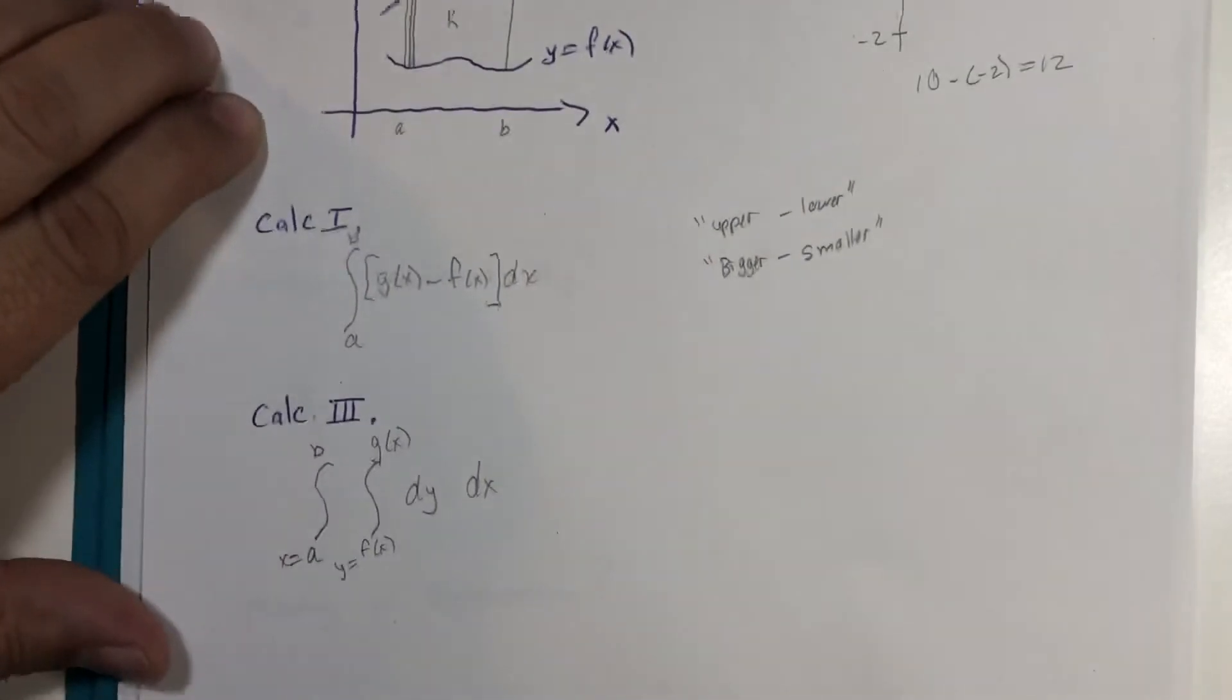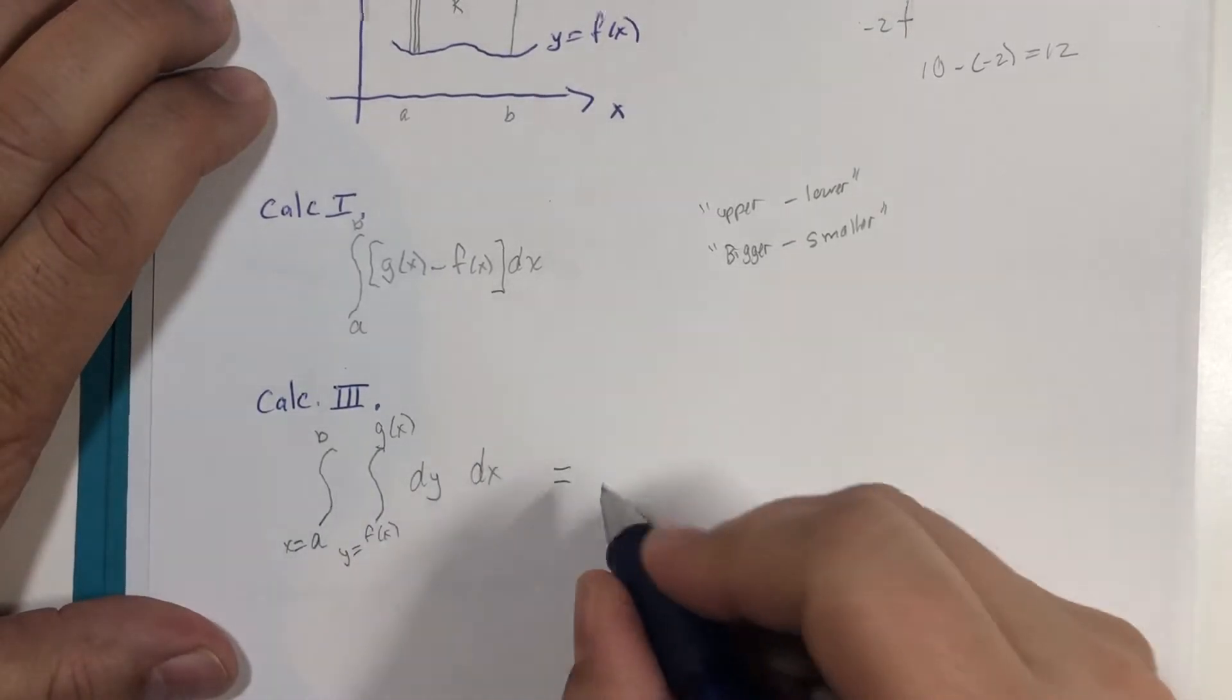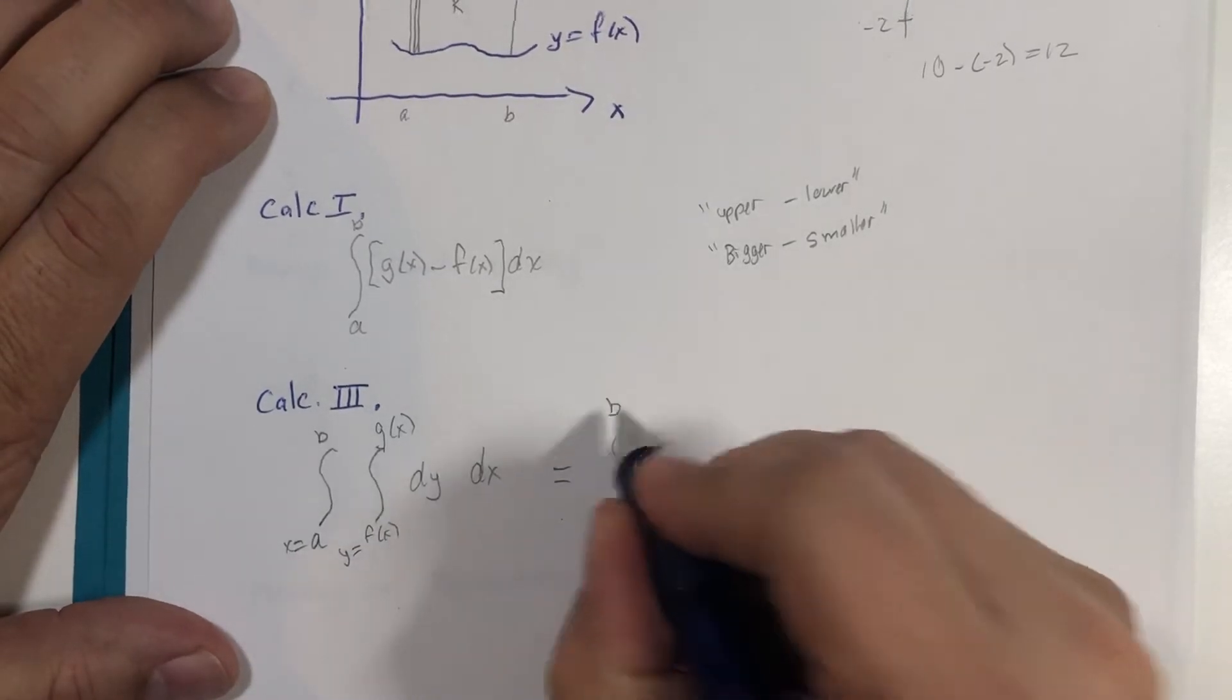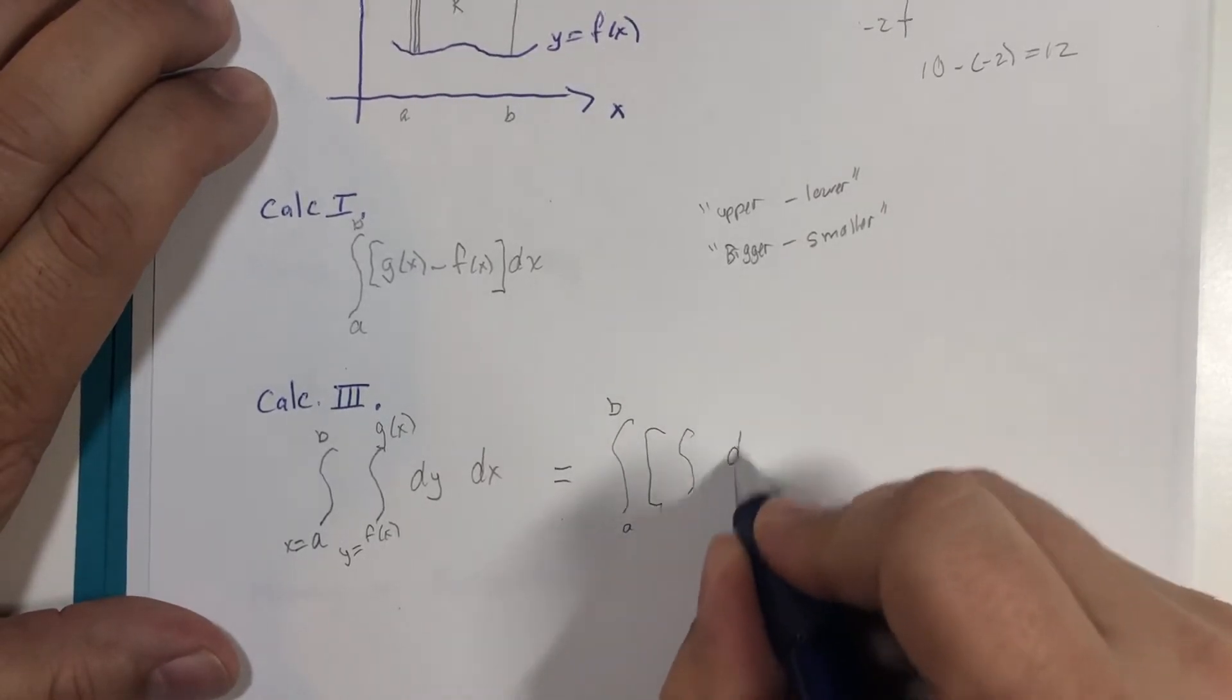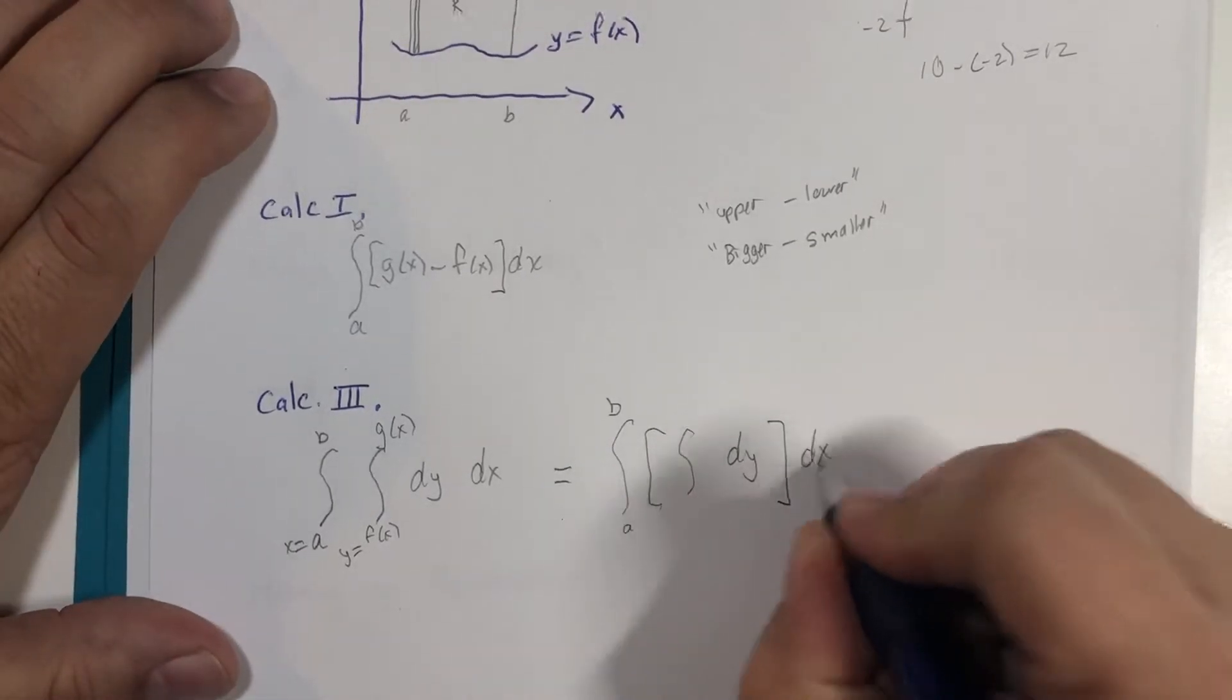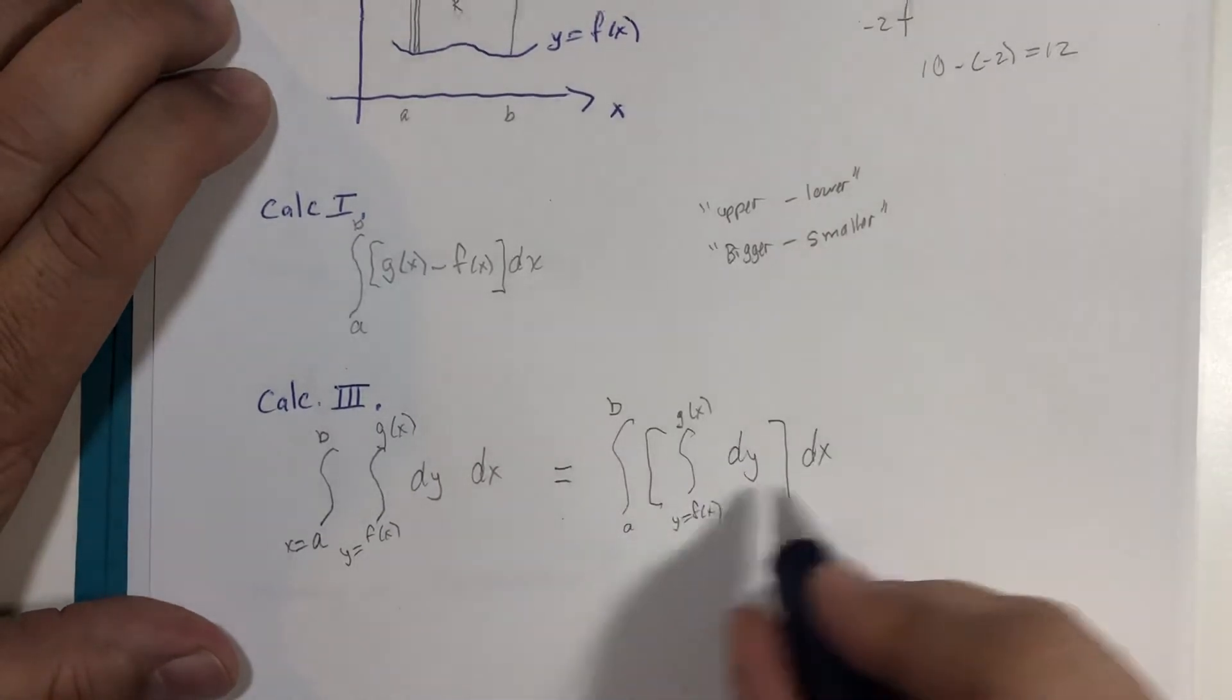And the cool thing is I can prove this. Remember we treat this second integral, this inside integral, as a first calculation, and then later we'll calculate with respect to x. And this goes from y equals f of x to g of x.